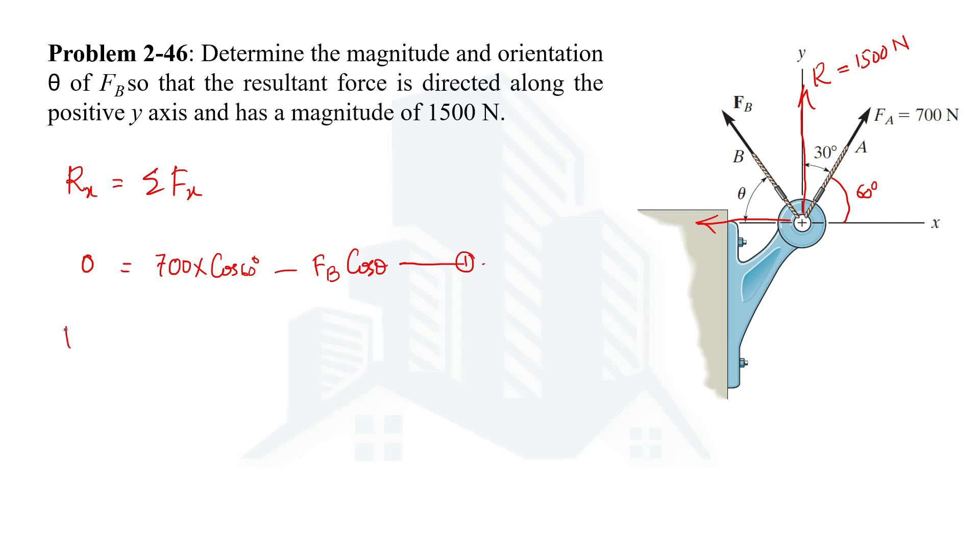Now the y component of the resultant force will be equal to summation of the forces along the y-axis. Since the resultant is directed along the positive y-axis, the y component is actually equal to 1500 Newton.